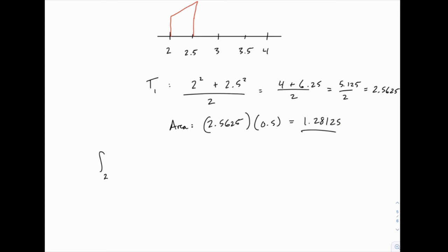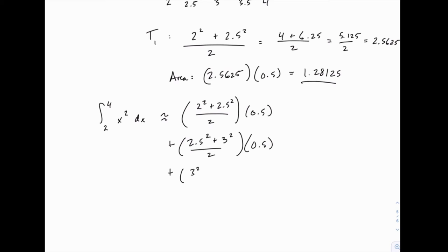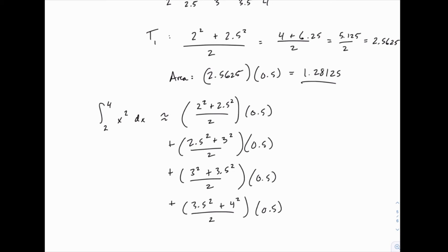In total, this integral is approximately equal to the sum of the values for each trapezoid. For each one we're plugging in the two endpoints — left and right — into the function, in this case x squared, so we're squaring each of them, then taking the average of those two answers and multiplying by the width delta x. So halfway between 4 and 6.25 is 5.125, and dividing by 2 gives the average height 2.5625. The area of the first trapezoid is that average height times the width 0.5, which comes out to 1.28125.